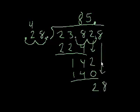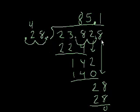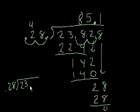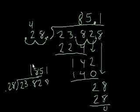28 goes into 28 exactly one time. 1 times 28 is 28. Remainder 0. Done. So 28 goes into 2,382.8 85.1 times. Or you could say 0.28 goes into 23.828 85.1 times. That's the answer we had gotten. And that makes sense.